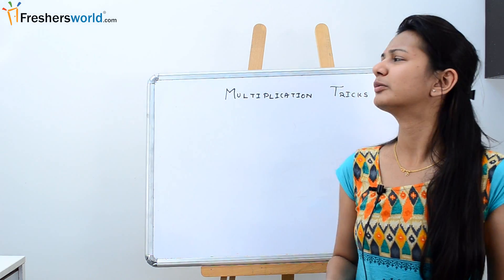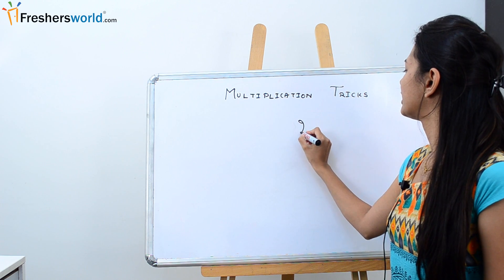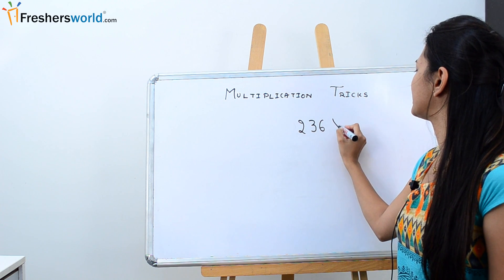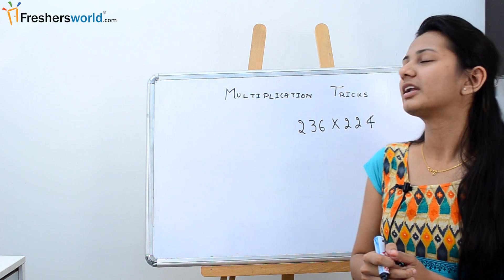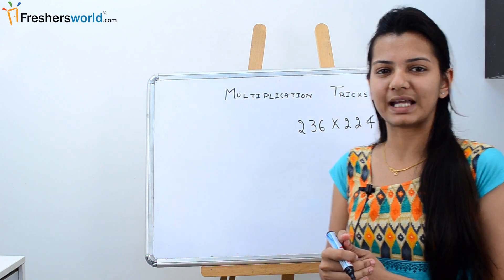So you all know that multiplying a huge number, say 236 into 224, would be a very huge task. Now let's see a simple method to crack this.